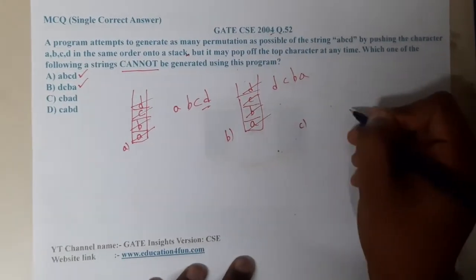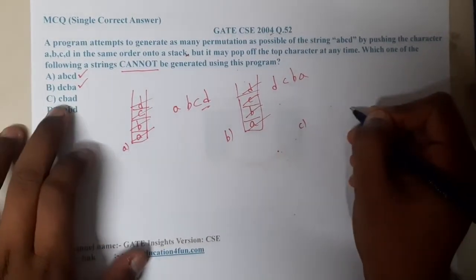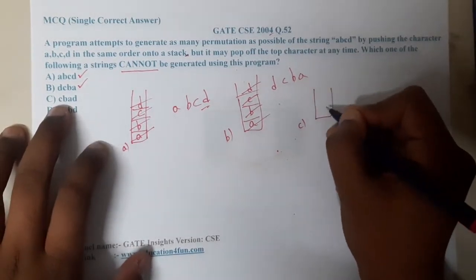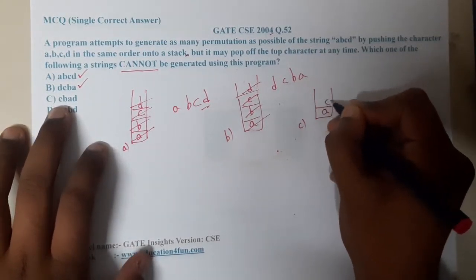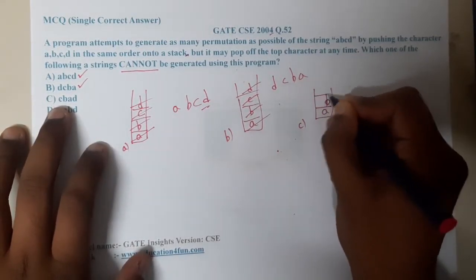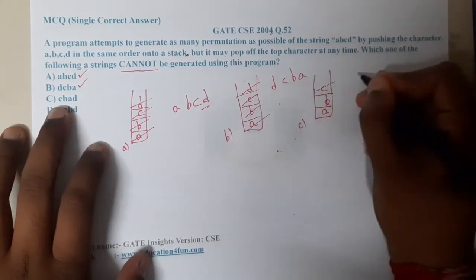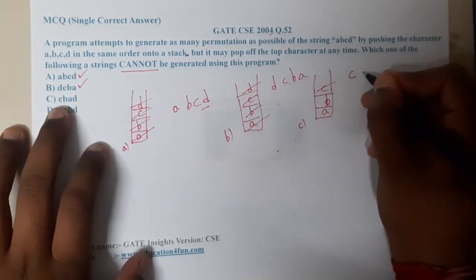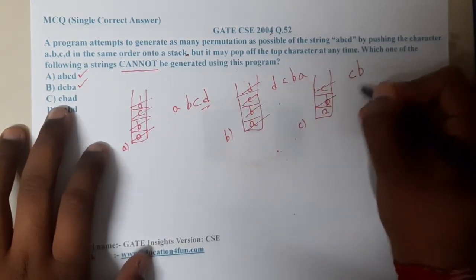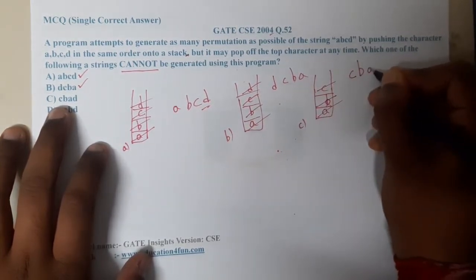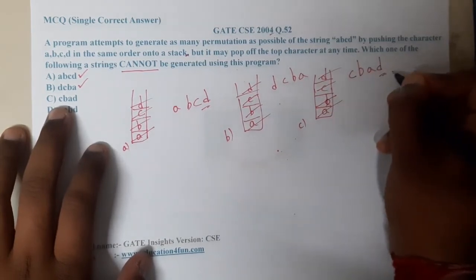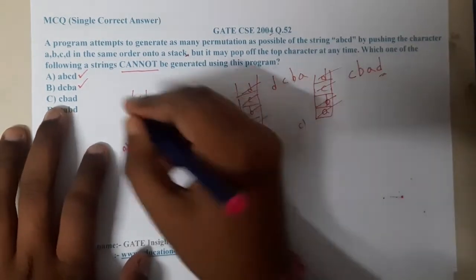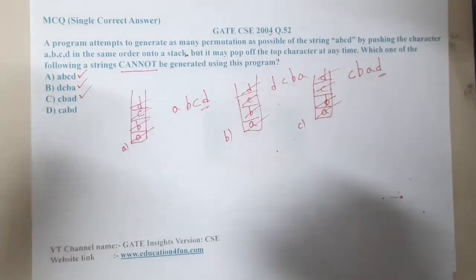For option C: it starts with c, so we push a, b, c and pop c, then pop b, then pop a. After that we push d and pop d. So this sequence is also correct.